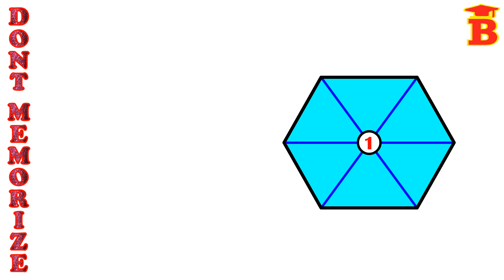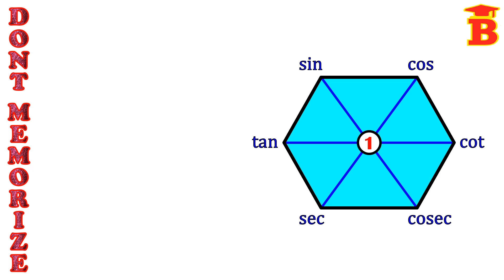The six trigonometric functions are sin, cos, tan, cot, secant, and cosecant. Let us place these trigonometric functions at the vertices of the hexagon: first sin, cos, then tan, cot, then secant and cosecant.